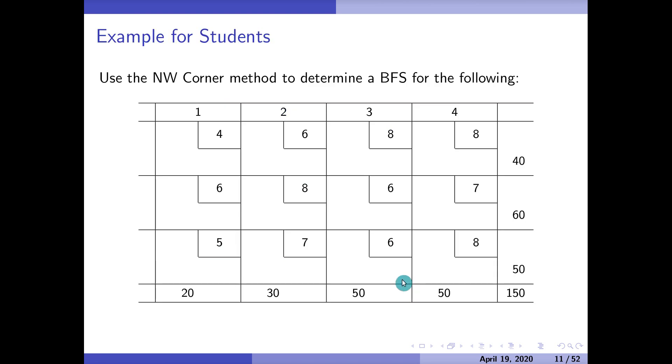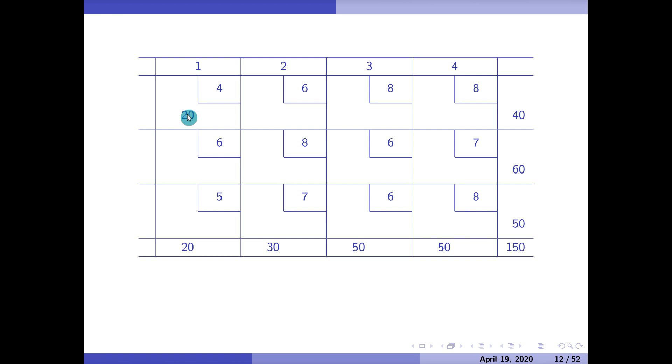Let's see if you can do one. Pause here for a second, try this one out, and then come back and see if your solution matches mine. Are you back? Let's see if your solution matches mine. So we started off here with a 20, so that leaves a 20 there, and I finished with this column. I go to the northwest corner. And that's it. So is this a basic feasible solution? Did you stop here?